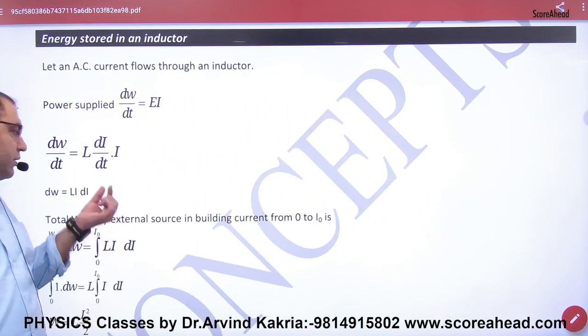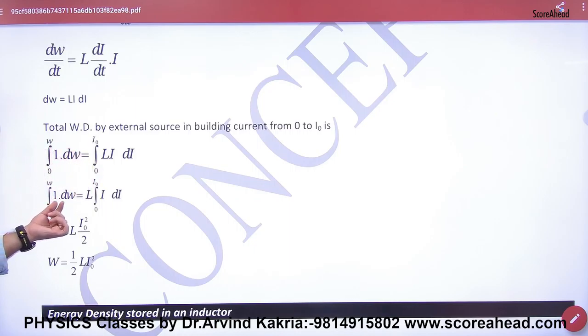So the current will change dI. And if total I amount of current passes, do the integration of both sides. What will be the total amount of work done? Integrate. If you have passed I₀ current, then I dI integration gives I₀ square by 2. So the answer is half L I₀ square.